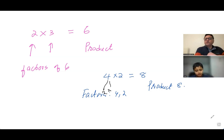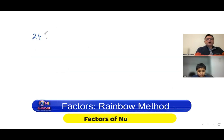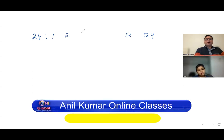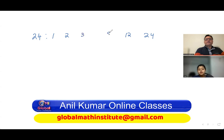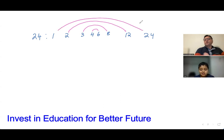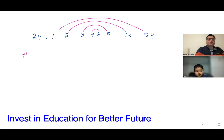Now, you must have seen that some numbers — for example, number 24 — can be made in many ways. You can multiply one with 24, two with 12, three with eight, four and six. These are the combinations which can give you 24. So how many factors does 24 have?